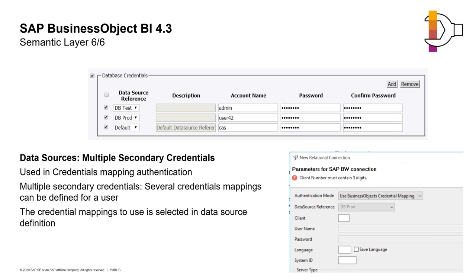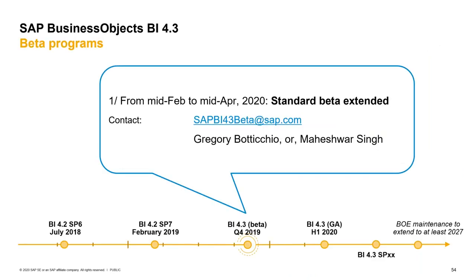That covers the semantic layer content. I never thought I'd have 50 minutes on the semantic layer, but there was a lot of content. If you're interested in these enhancements, the Standard Extended Beta is still open. You can join by writing to Patrick at GB&Smith, or by emailing sapbi4freebeta@sap.com. The standard beta extended will continue until mid-April. The General Availability of BI 4.3 is planned for mid-June 2020.